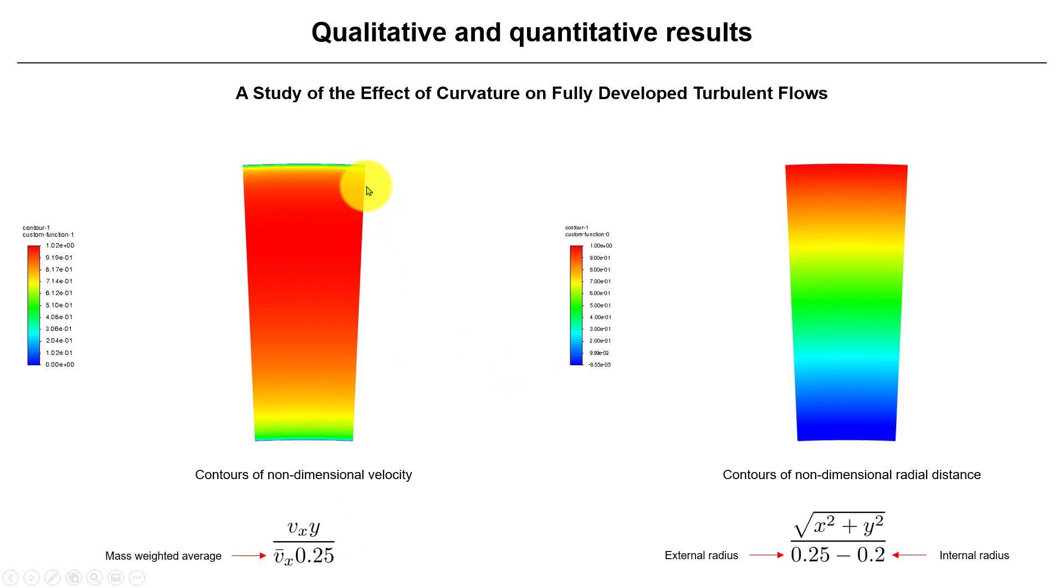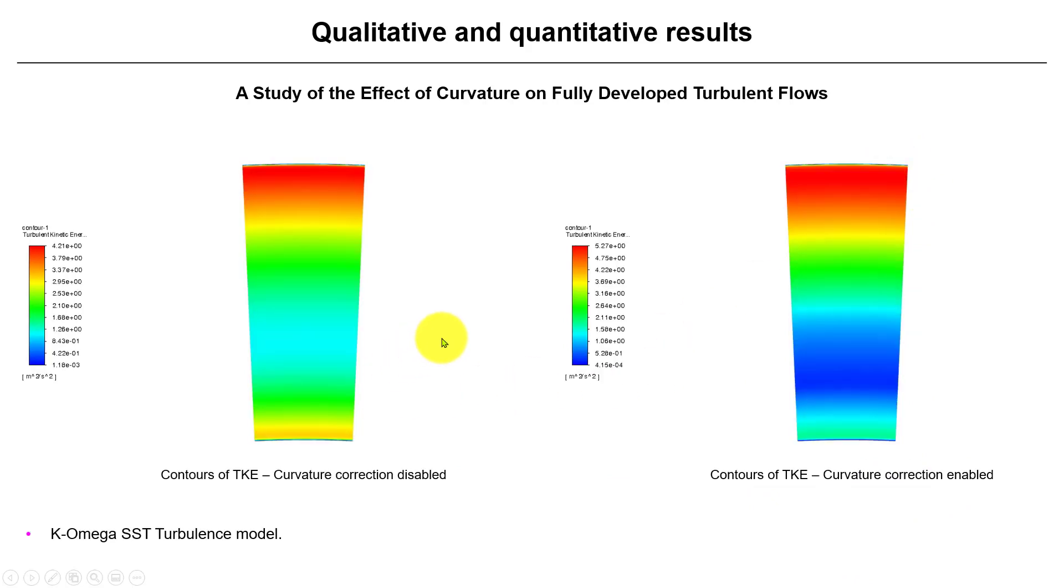And this is what we have the quantities. So we're normalizing the quantities. So here we have this custom function, non-dimensional velocity. And here we have non-dimensional radial distance, how it was computed.